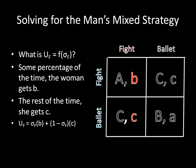As always, some percentage of the time, the woman gets b, and the rest of the time, she gets c. And the last bullet point has the mathematical notation for that.